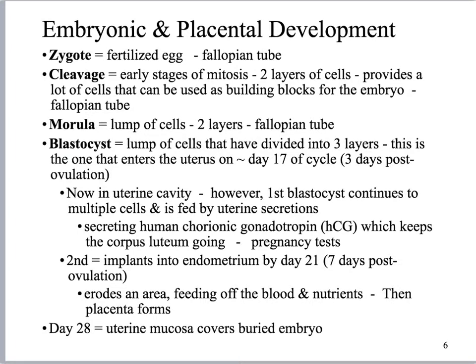So we have the stages of development. What you need to know are the different stages — just memorize them quickly. You've got zygote, cleavage, morula, blastocyst. Zygote you should remember pretty easily. Blastocyst is going to be the stage where it actually implants into the uterine lining. At the blastocyst stage you've got the three germ layers, which should have been discussed in lecture class. It's going to drop into the uterus around day 17 of the cycle, so about three days after ovulation.